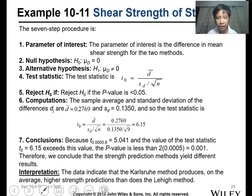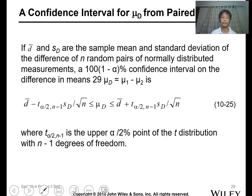Based on the conclusion with alpha 0.005 and eight degrees of freedom, it's 5.01. The value of the test statistic 6.15 exceeds this value, so the p-value is less than 0.001. Therefore, the strength prediction methods yield different results. The data indicate that the Karlsruhe method produced, on average, higher strength predictions than the Lehigh method. D bar and s bar are the sample mean and standard deviation of differences of n random pairs. You can use this one for the confidence interval, which I'll discuss during our lesson on confidence intervals.